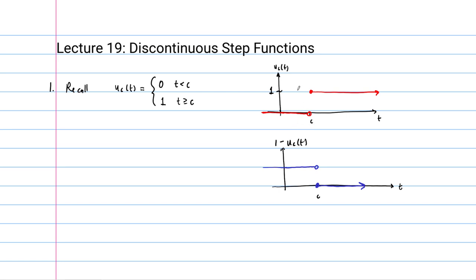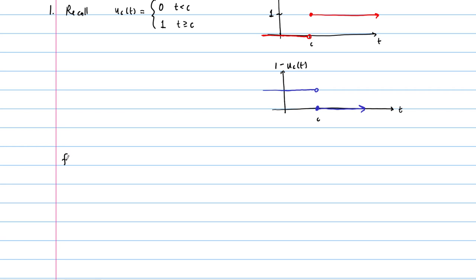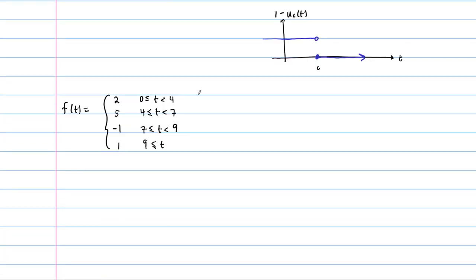We're going to use these simple building block step functions to build more complicated step functions, which we'll use in differential equations. Here's an example: a piecewise function equal to 2 when t is between 0 and 4, equal to 5 when t is between 4 and 7, equal to negative 1 when t is between 7 and 9, and equal to 1 when t is greater than or equal to 9. Let's sketch this function and then write it as a linear combination of our u sub c's.